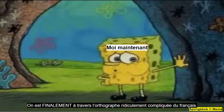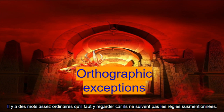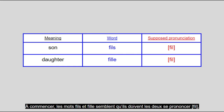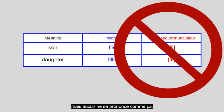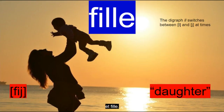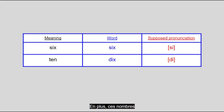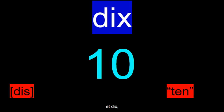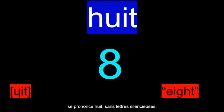We are finally through French's ridiculously complicated orthography. Psyche! There are some fairly common words we need to look at because they don't follow all the aforementioned rules. To start, the words for son and daughter both look like they should be pronounced /fi/, but neither of them actually is. The word for son is /fis/ and the word for daughter is /fij/. Also, these numbers six and dix are pronounced /sis/ and /dis/, and huit is pronounced /ɥit/ — no silent letters.